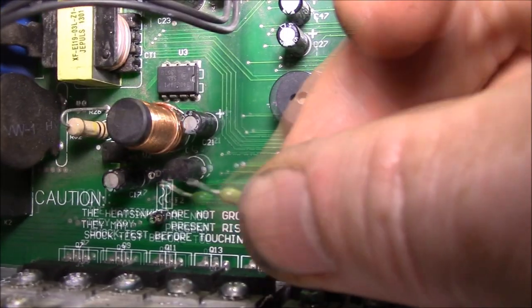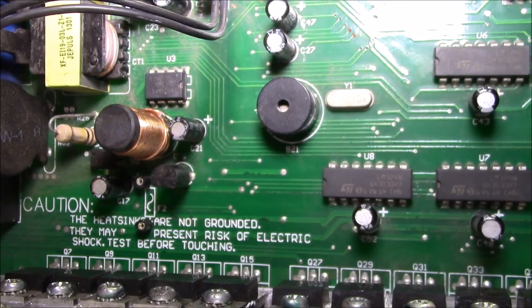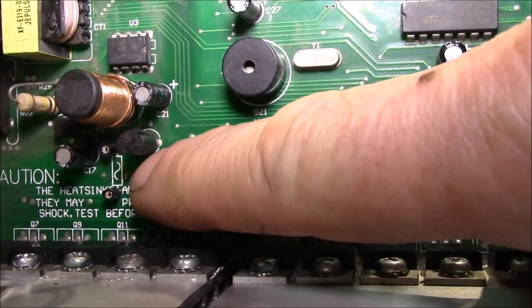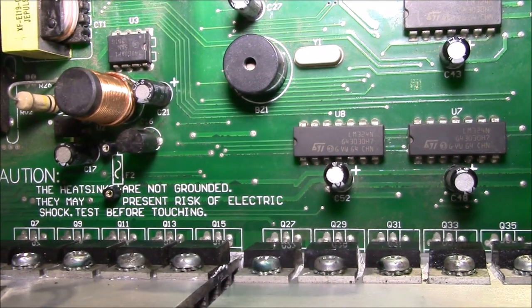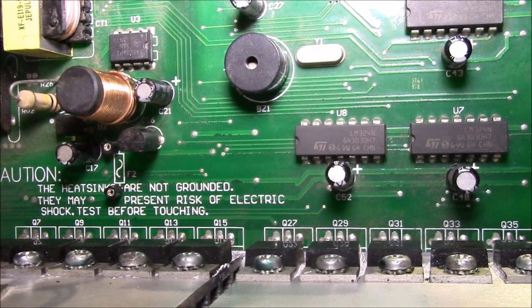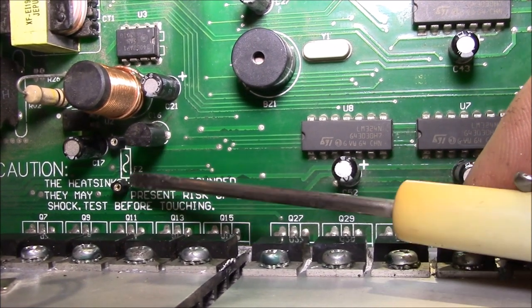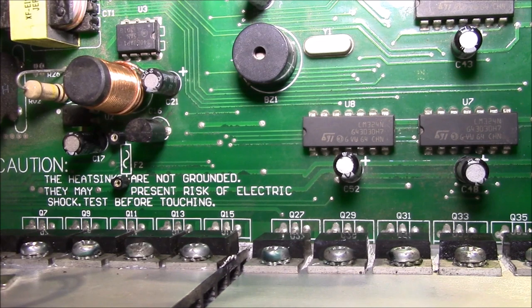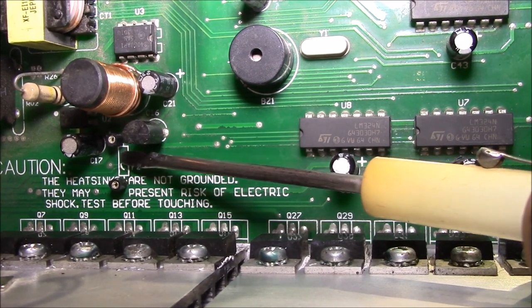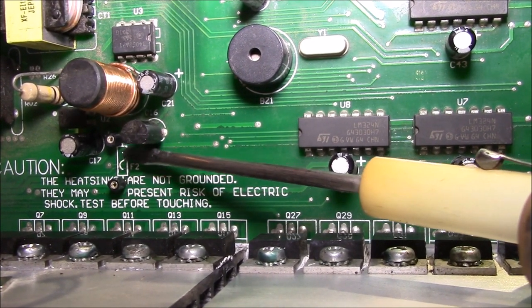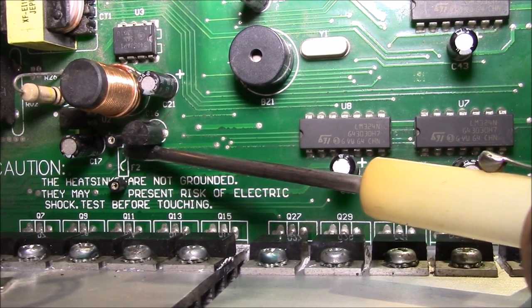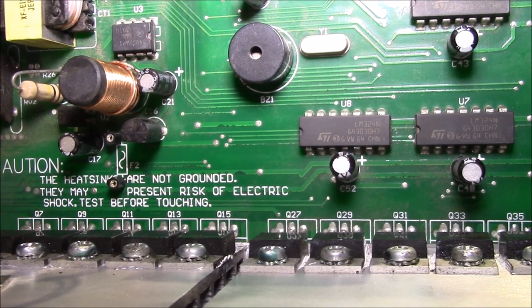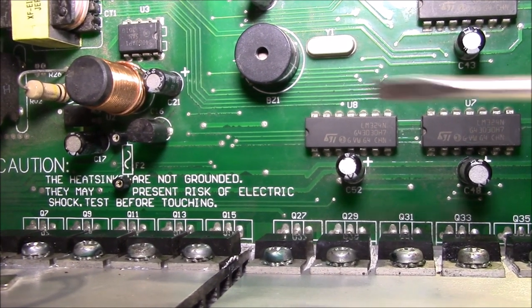Once I get the new fuses in, I'm going to just slip those into the sockets because I'm not sure if this blew because the capacitor shorted or was there another problem here. I just don't want to go soldering a new fuse in and having it blow right away, so I figured putting those sockets in should make replacing it a lot easier in the future. There's some surface mount things right behind this fuse and I'm just afraid of damaging the tracks if I have to desolder it more than a couple of times.